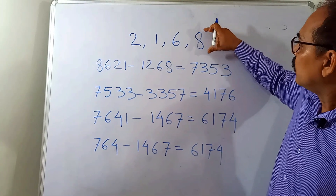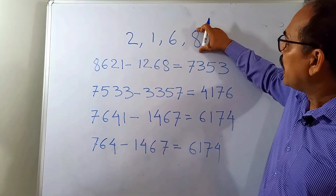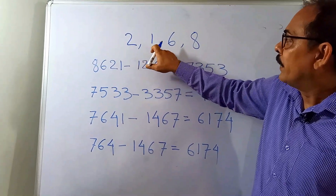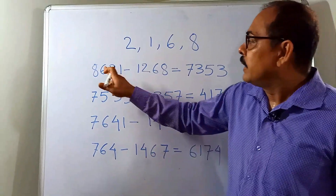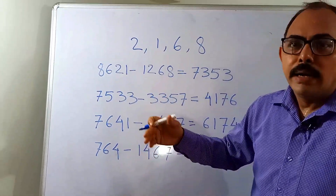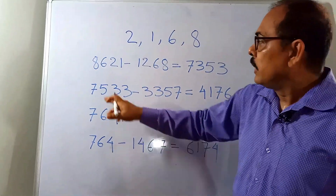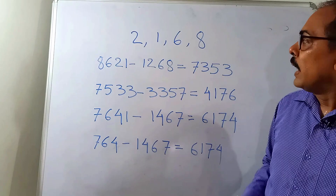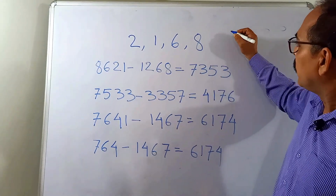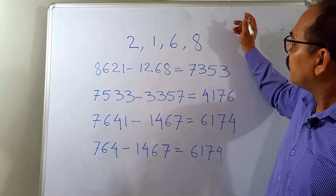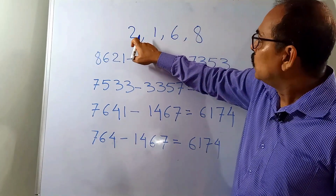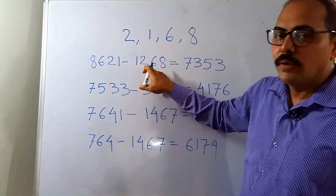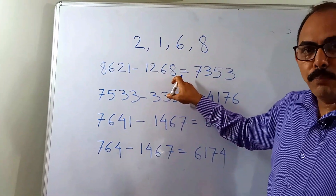With these four digits, we'll first make the largest number. We arrange the digits in descending order: 8, 6, 2, 1 — so 8621 is the largest number. And what is the smallest number? We arrange them in ascending order: 1, 2, 6, 8 — so 1268 is the smallest number.